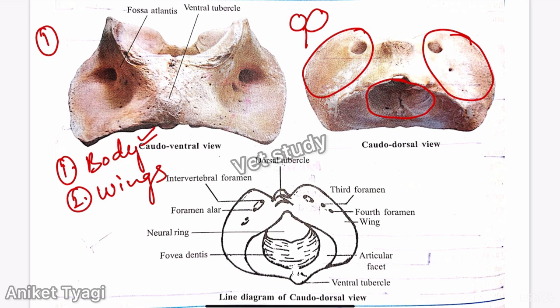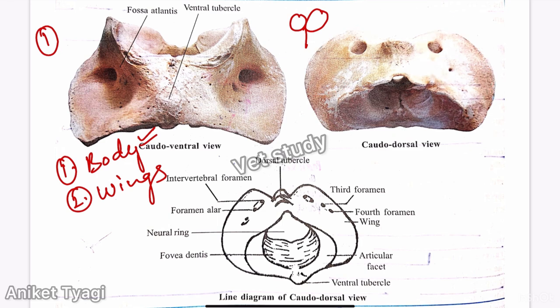The body of the atlas is in the form of a thick plate — it is not cylindrical as in other vertebrae. The ventral wall of this thick plate forms the neural ring.